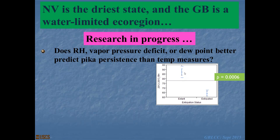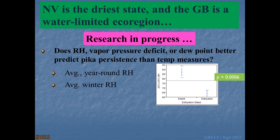We're looking at several response variables related to various mechanisms of stress: average year-round chronic relative humidity, winter relative humidity, average summer relative humidity, average daily low and high RH and the daily spread in summer. We're also using thresholds relating to likely very dry conditions, probable snow cover, and 70% when snow or rain is around. Understanding variability is part of the game as well.